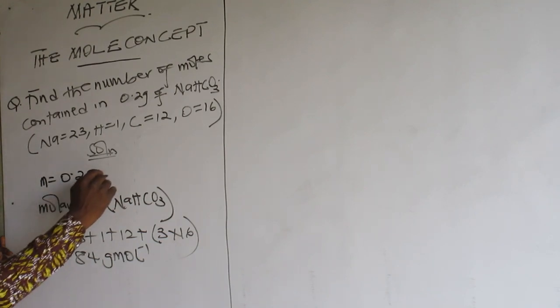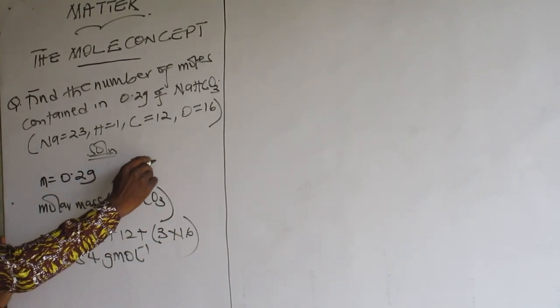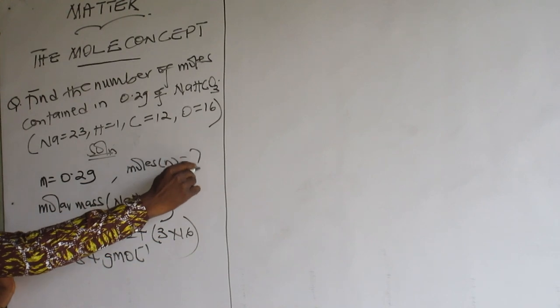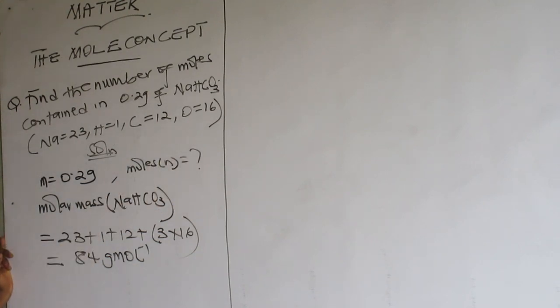Find the number of moles. So number of moles, small n. Now there is a relationship between mass and molar mass. So number of moles equals mass over molar mass.